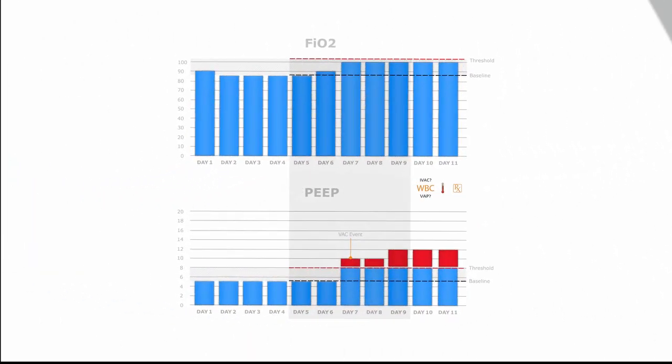This next patient has a VAC based on PEEP. The patient's FiO2 baseline was set at 85%, meaning a VAC threshold based on FiO2 would require 105% — which is not achievable — so this VAC is triggered by PEEP instead. In the PEEP graph, the patient has a stable PEEP of five, then on day seven the PEEP went up by more than three centimeters of water and stayed at that higher level through day eight. Day seven is the VAC event date, and days five through nine are the VAE window period, during which evidence of infection could elevate this to an IVAC or possible or probable VAP.